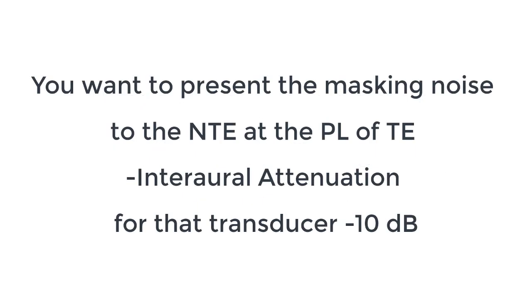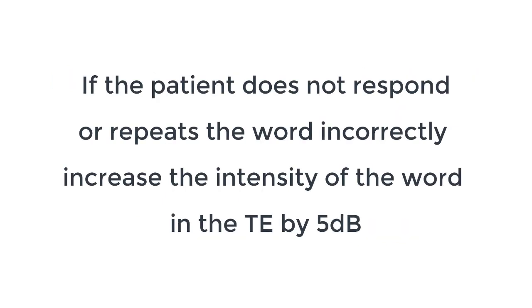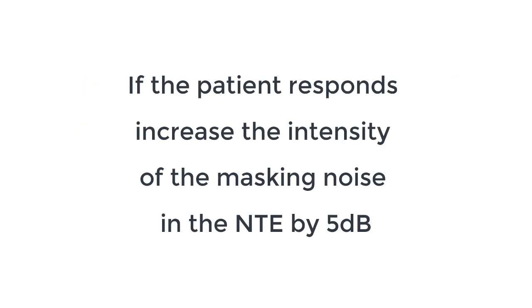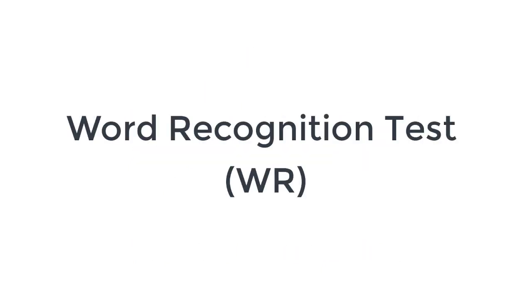If masking is needed for the speech recognition threshold, you want to present the masking noise to the non-test ear at the presentation level of the test ear minus interaural attenuation for that transducer, minus 10 decibels, plus a correction factor of 10 decibels, and present the word to the test ear at threshold. This is also called the Studebaker method. If the patient does not respond or repeats the word incorrectly, increase the intensity of the word by five decibels. If the patient responds, increase the masking noise in the non-test ear by five decibels. Repeat until the patient responds at the same intensity level while increasing the masking noise by five decibels three times in a row — the plateau method.